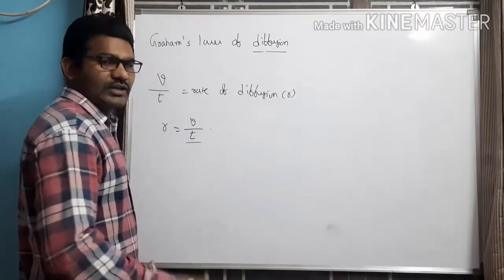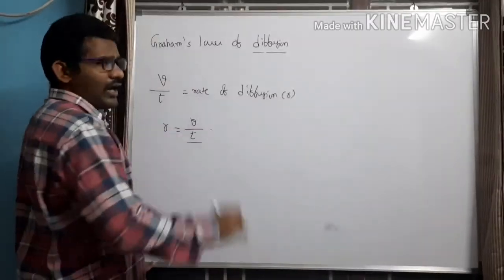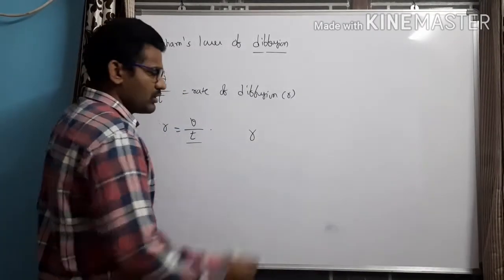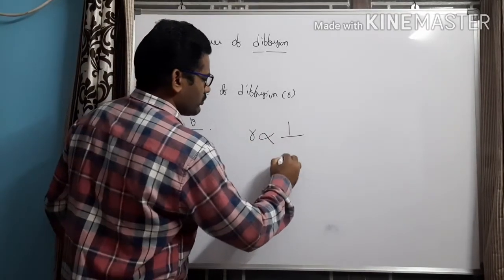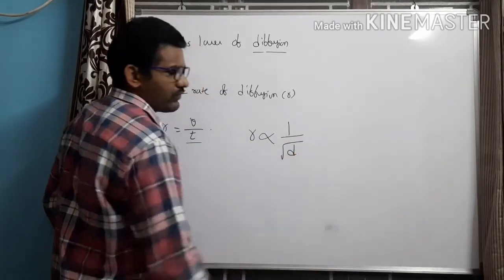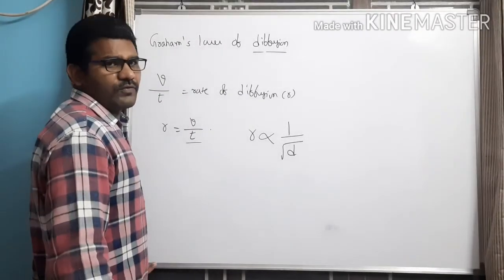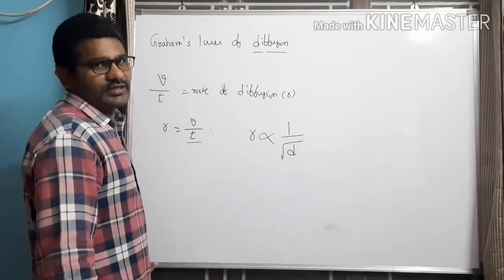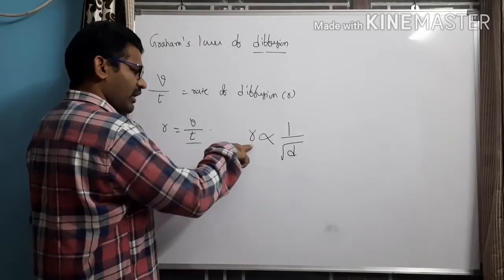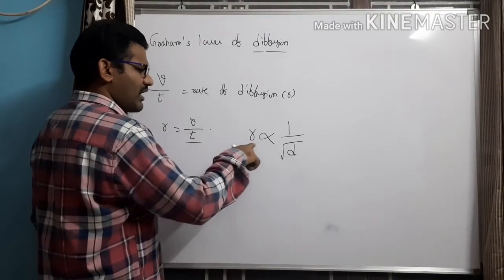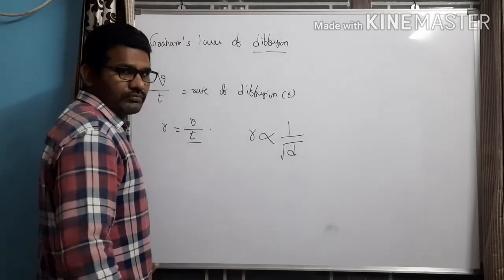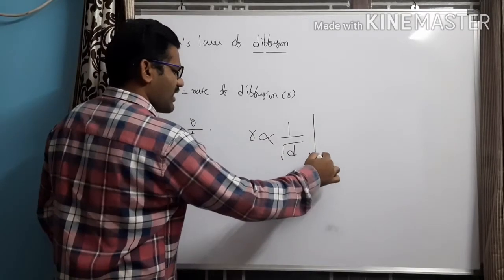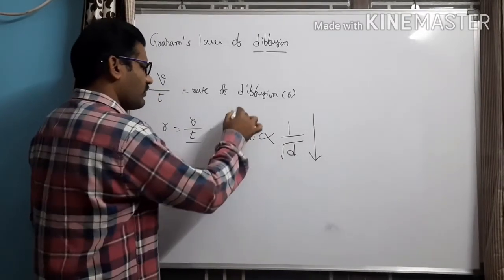According to Graham's Law of Diffusion, the rate of diffusion of a gas is inversely proportional to the square root of its density. This means the rate of diffusion and the density of the gas are inversely proportional to each other. If the density of a gas is less, its rate of diffusion will be more.